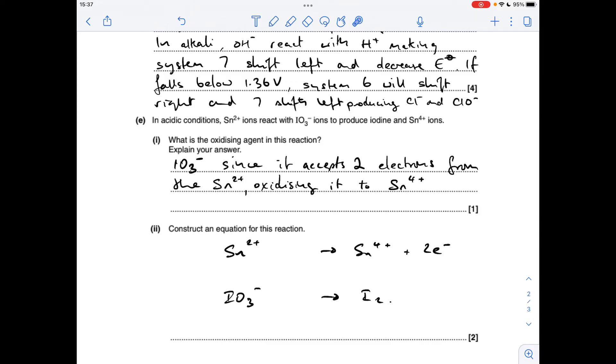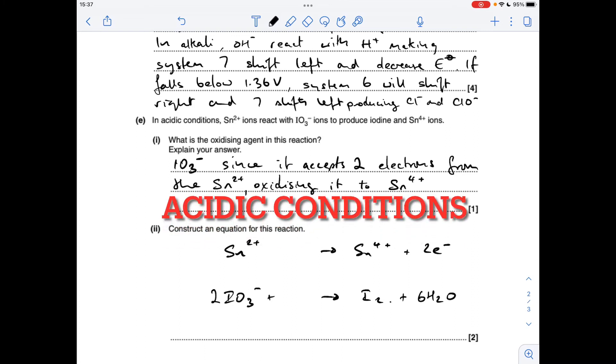Moving on to the other one, we've got IO3 minus going to I2. The first thing I'm going to do is balance or start balancing the atoms, so the obvious thing to do first is put a 2 there so it gives me two I's on each side. I've now got 6 O's on the left, so if I put 6 H2O's on the right that gives me 6 O's left and right. That's introduced hydrogen, so I've got 12 H's now, so if I put 12 H+ that gives me all the atoms I need.